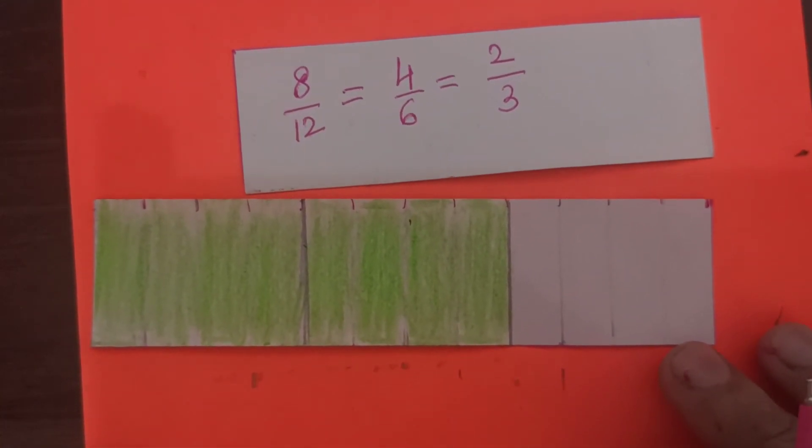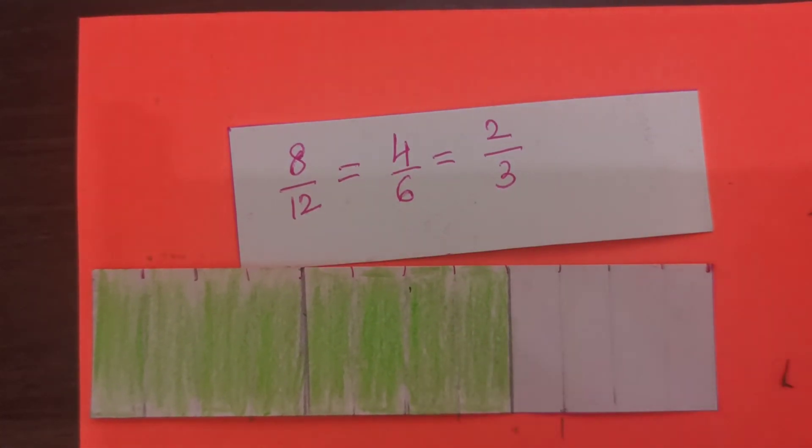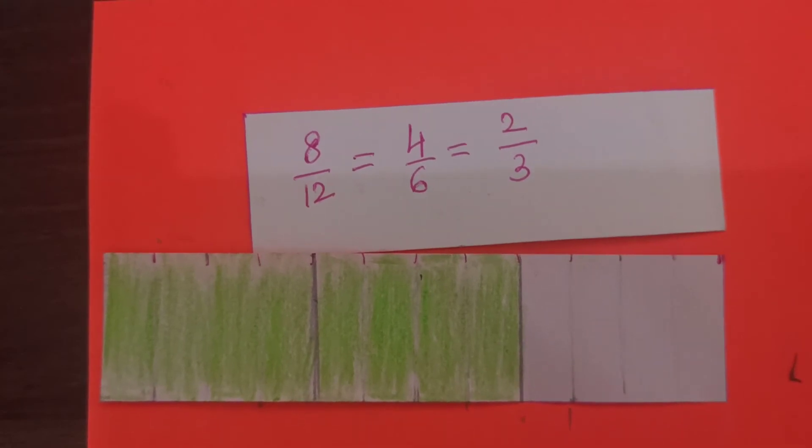So, again the shaded area I didn't change. So, all these 3 fractions are equivalent. And, 2 thirds is the simplest form of 8 twelfths because further I cannot reduce any number of parts. Because, total there are 3 parts.